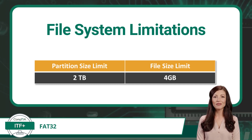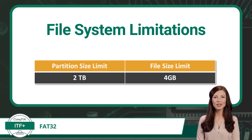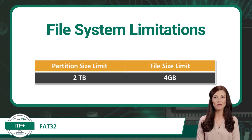Another significant constraint of FAT32 is its file size limit. Individual files stored on a FAT32 formatted drive cannot exceed 4GB in size. This limitation can be problematic when dealing with large video files, high-resolution images, or other large data files that surpass the 4GB threshold. Try to create a file over 4GB in size and you are likely to see an error message.